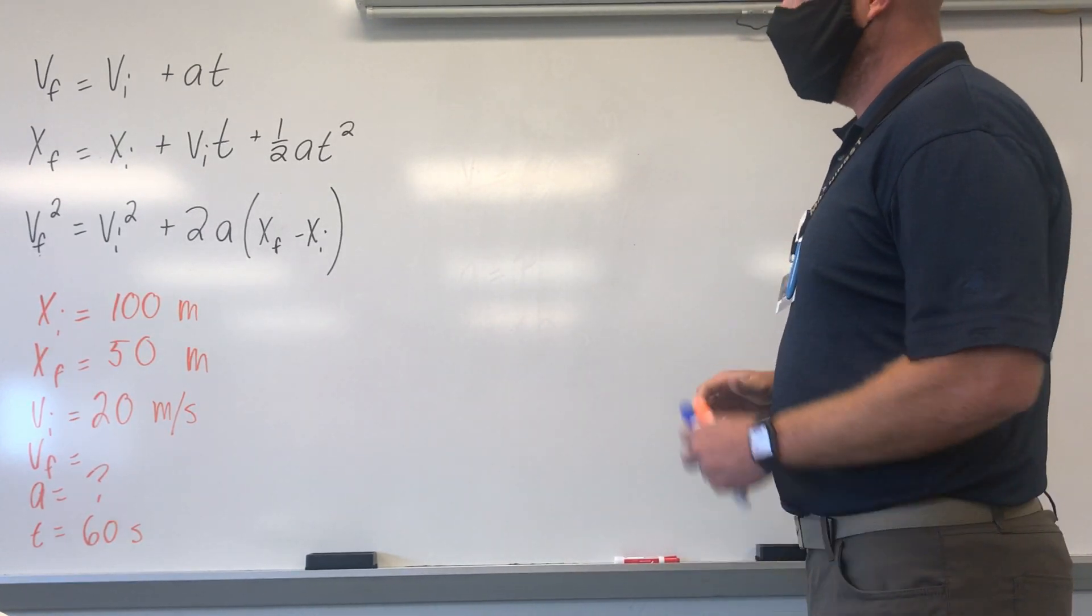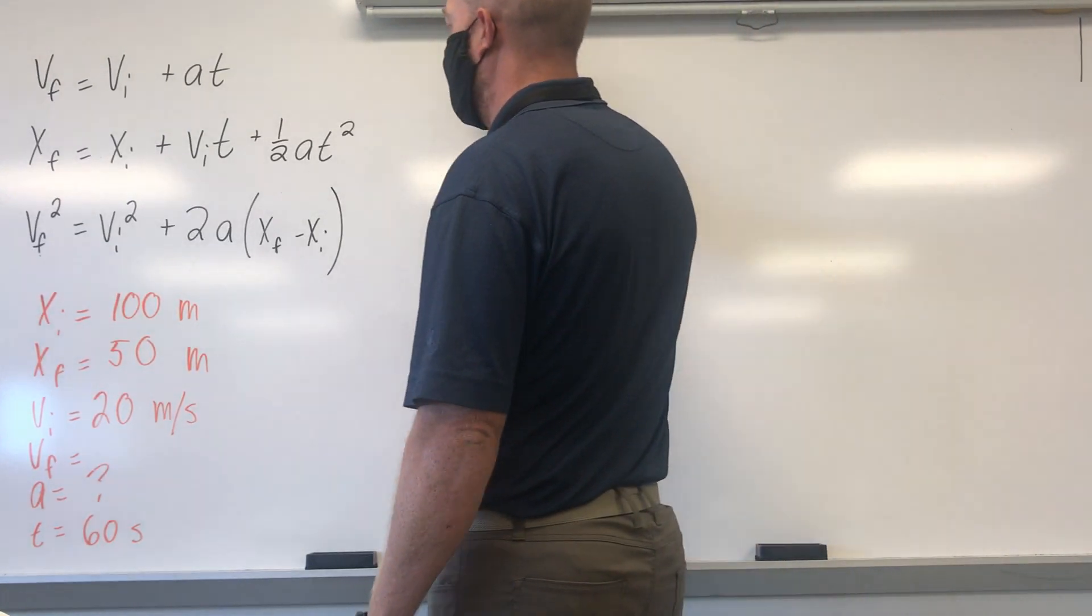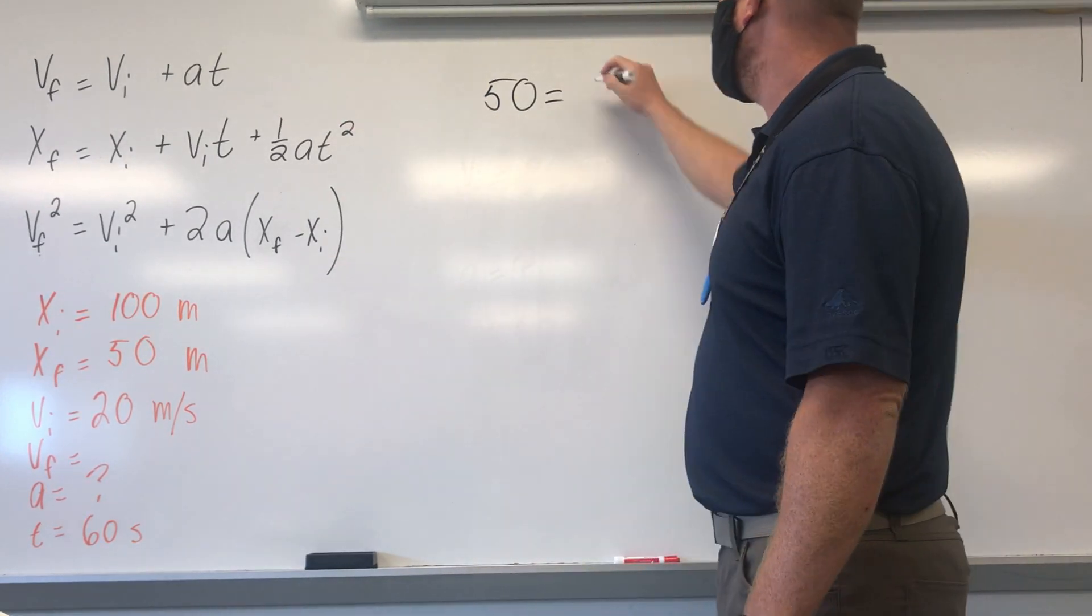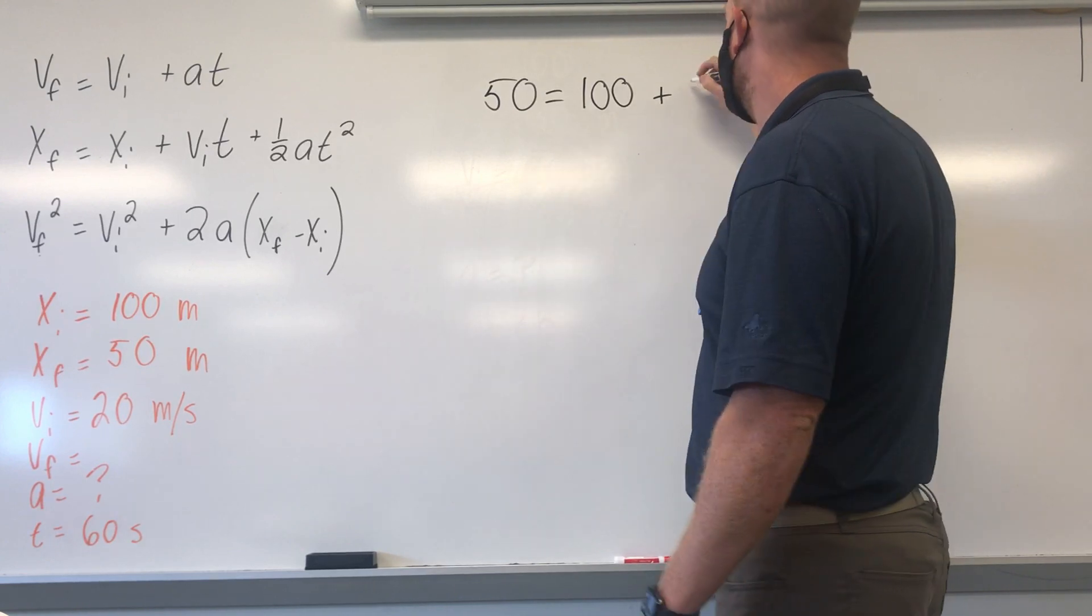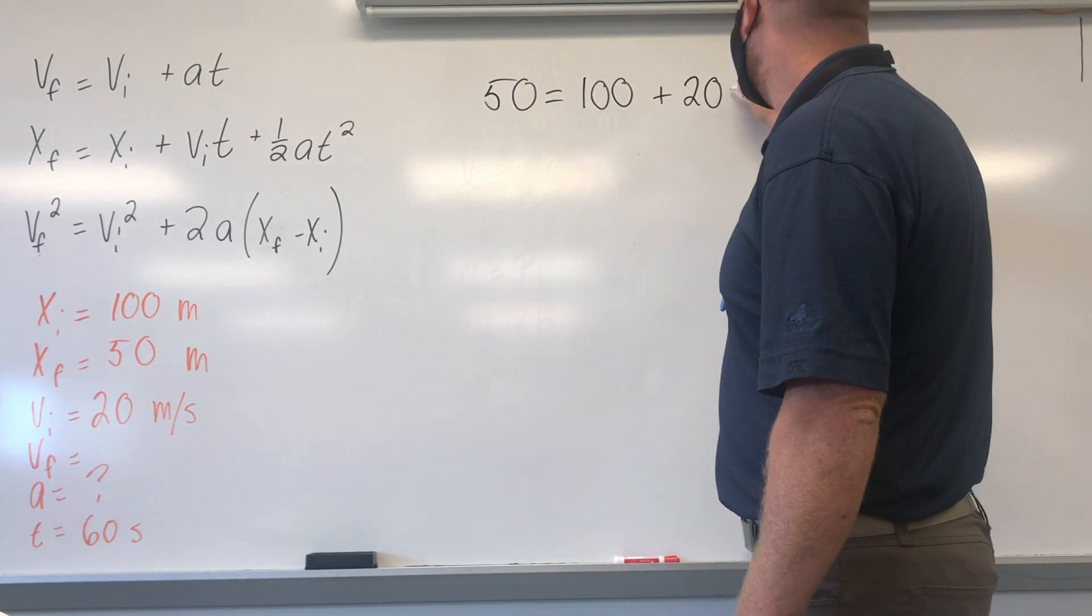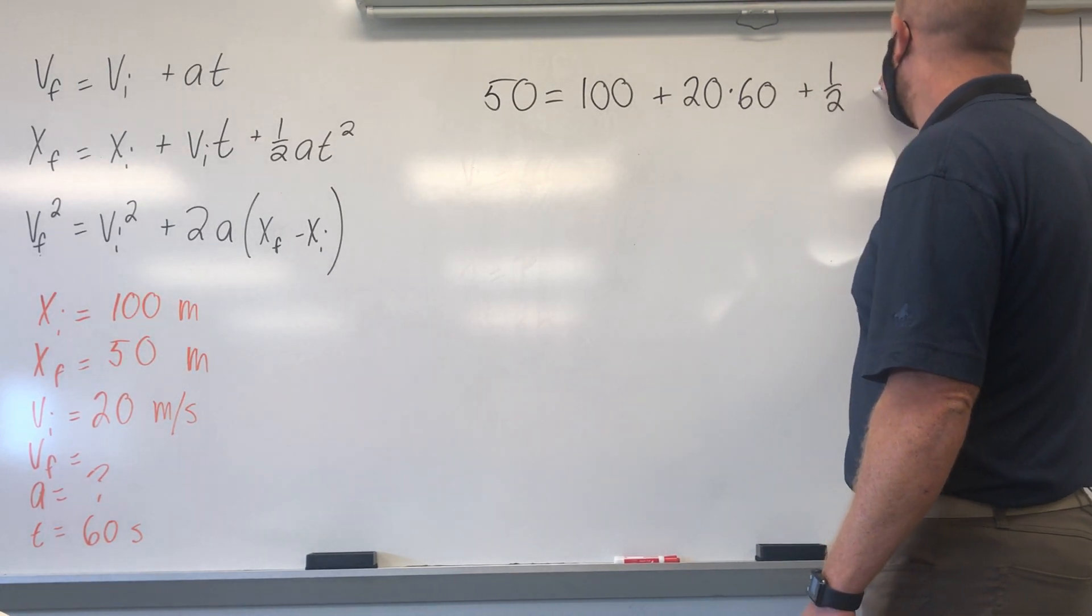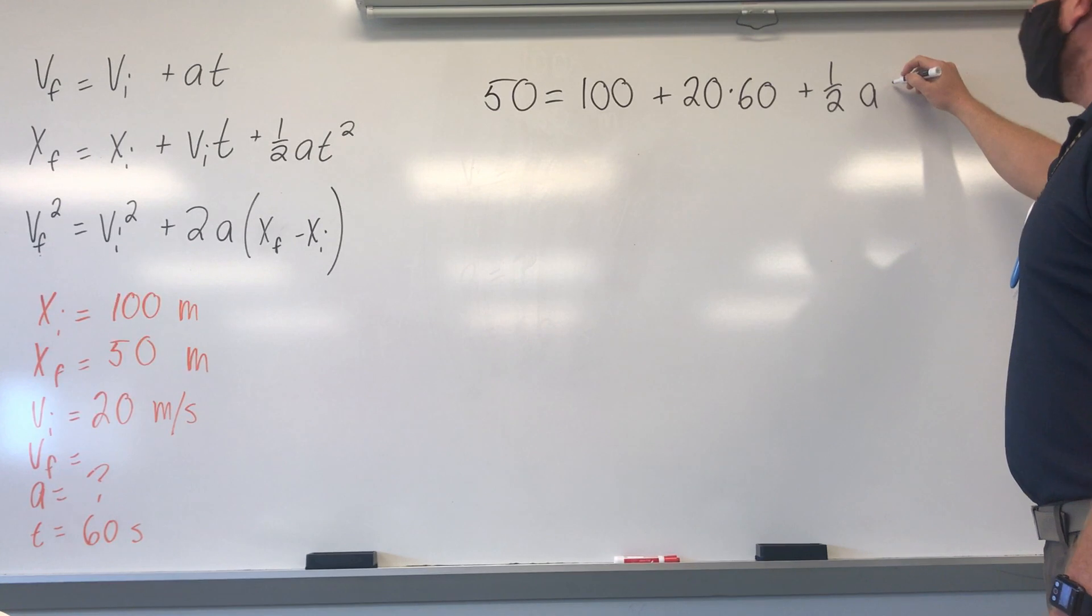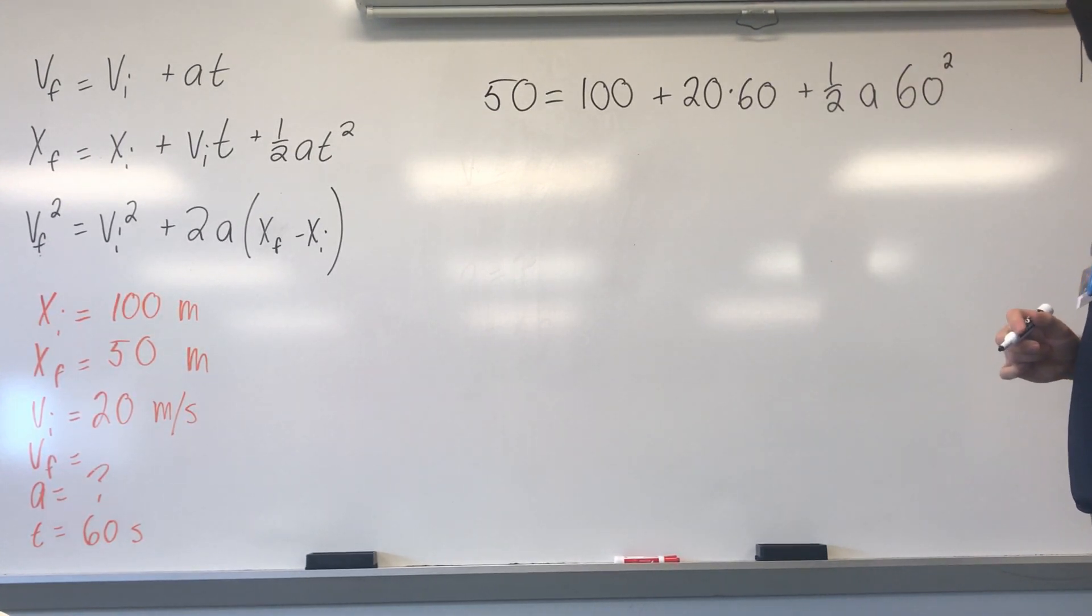So, what I'm going to do this time around is I'm going to plug in the numbers. So, I'm going to end up with my final position of 50 is equal to my initial position of 100 plus my initial velocity of 20. I have a time of 60 seconds plus one half my acceleration, that's my unknown, times 60 squared.